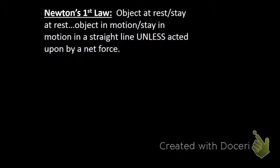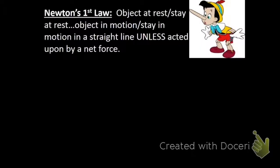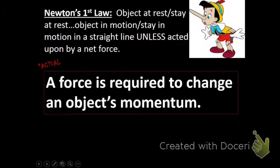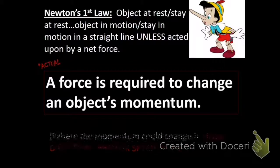What we're going to do next is revisit Newton's three laws of motion, but now we're going to put them in terms of momentum. So an object at rest stays at rest unless acted on by an unbalanced force, a net force. We can actually say that in terms of momentum. We can say a force is required to change an object's momentum. Now, momentum could be a result of any mass change, direction change, or speed change.